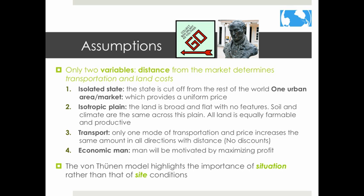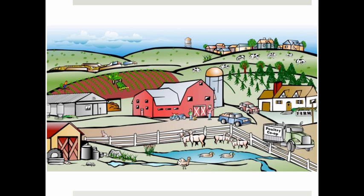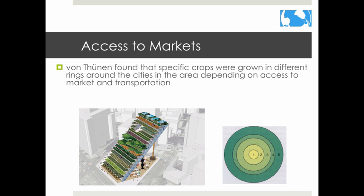Von Thünen hypothesized that under these assumptions, a pattern of concentric rings around the market would develop — it looks a lot like a target. Von Thünen found that specific crops are grown in different rings around the city depending on access to market and transportation.